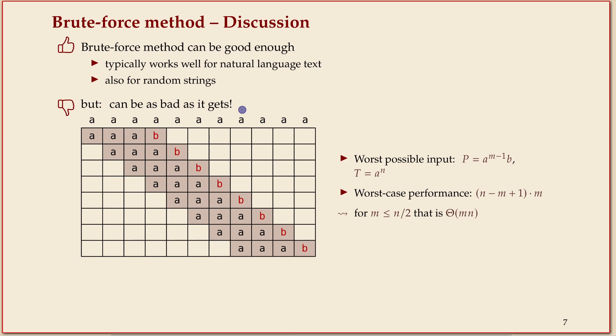But it can be really bad. Here's an extreme worst case: if the text is all a's and your pattern has lots of a's but then one character at the end that's different, then you're actually doing all the checks that are possible. So the worst case is this n times m. You should always think of the text being really big, but the pattern might or might not be big.